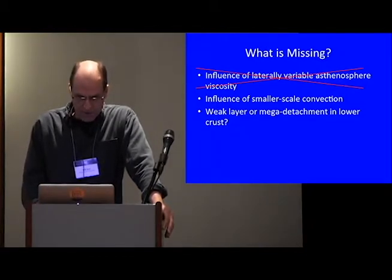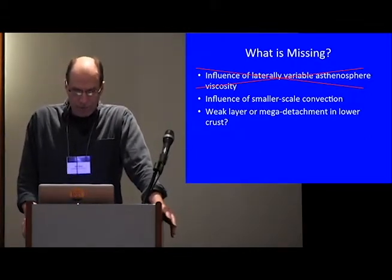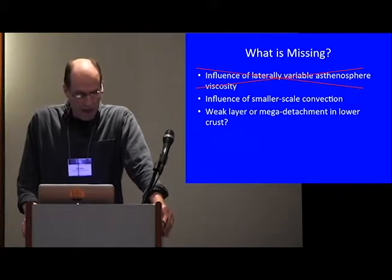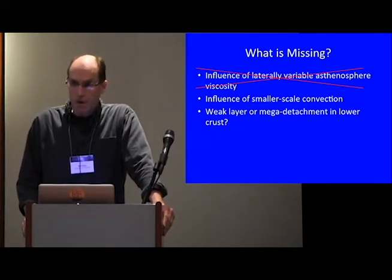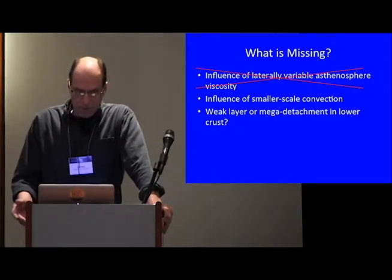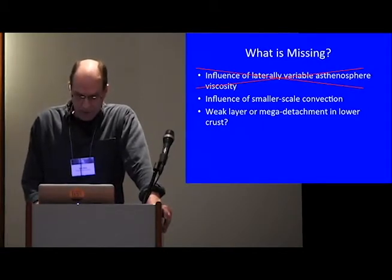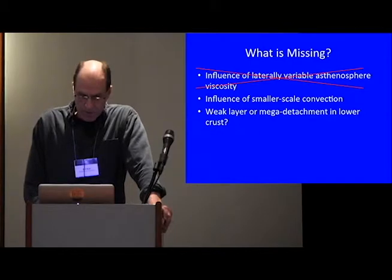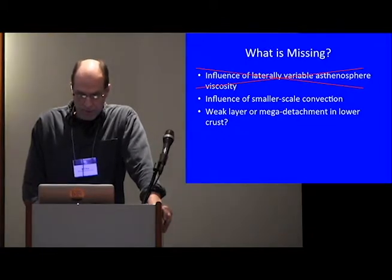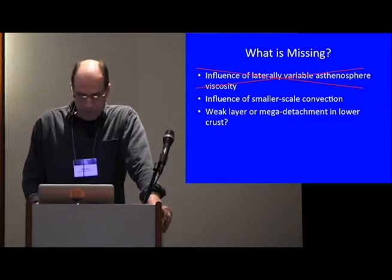What I strongly suspect, and what we're working on now, is that you have to account for the influence of smaller scale convection. These high-resolution tomography models that Brandon so excellently summarized show a lot of detail, and this has to be taken into account. Secondly, Wernicke and Davis and their colleagues have hypothesized that there's a mega-detachment beneath the Great Basin. And this is also something that we're investigating as a possible means for decoupling with mantle flow.